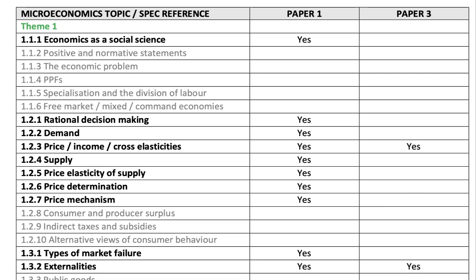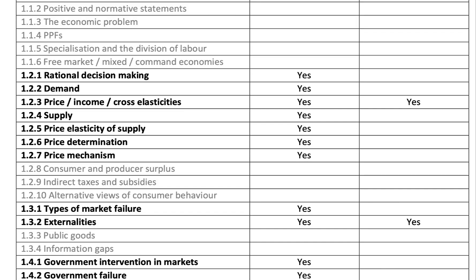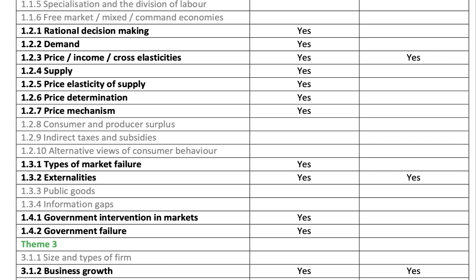They have taken out consumer surplus and producer surplus, and also indirect taxes and subsidies, and some behavioural economics. However, keep in mind that you can still use these concepts. So if you're talking about economic welfare — for example, the economic welfare effects of monopoly or collusion and oligopoly — you'll be bringing in the concepts of consumer and producer surplus. Please do revise them. However, they will not be the subject of specific questions in the papers.